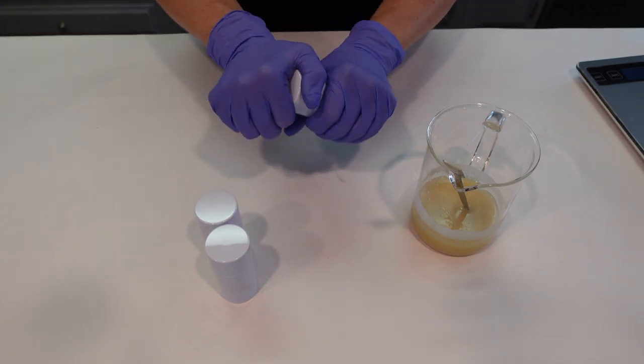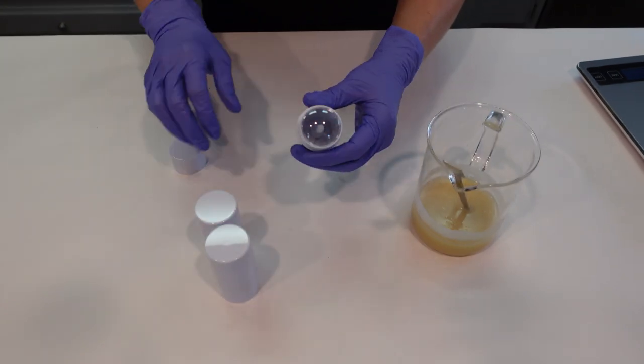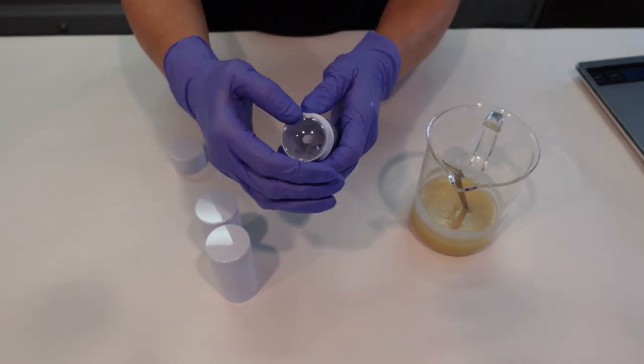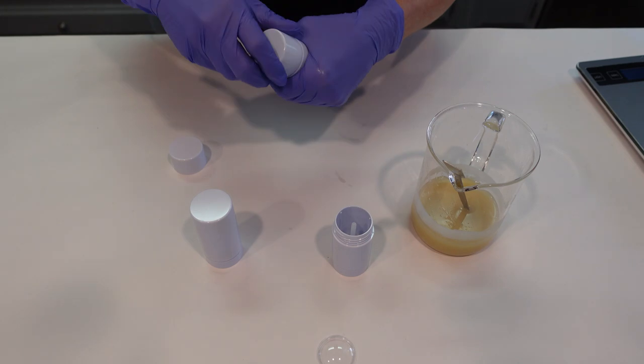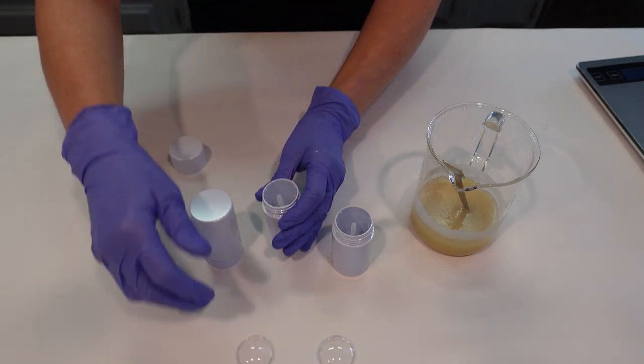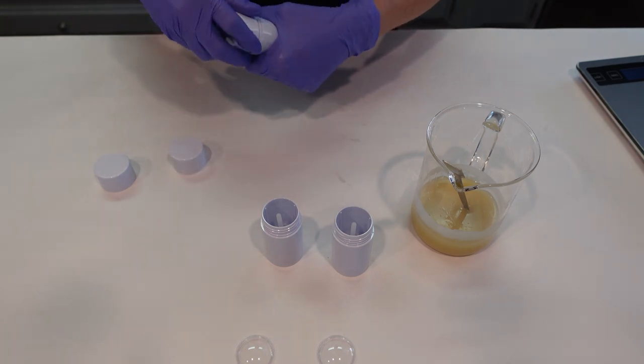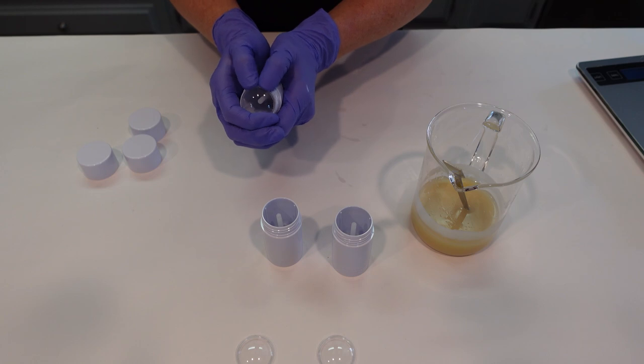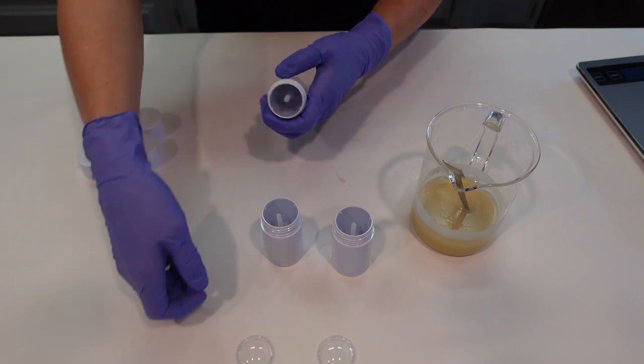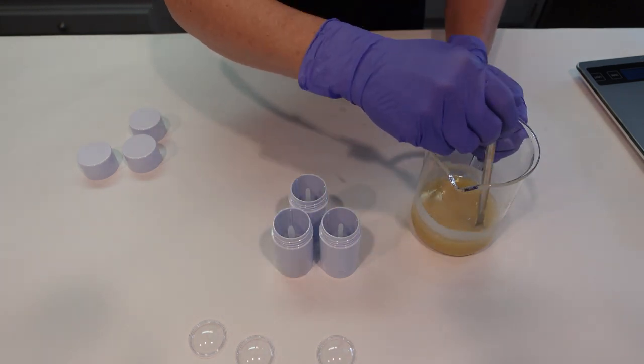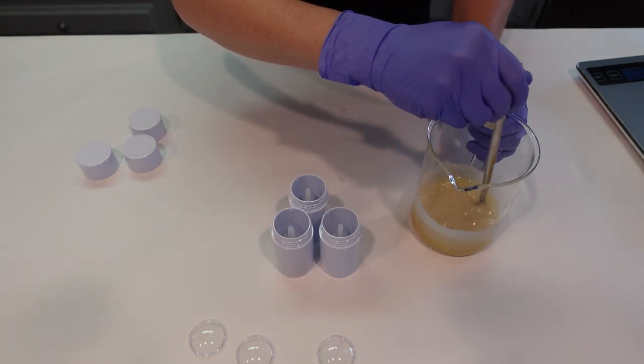All right, we're going to be pouring into these cute little one ounce containers. They have these little domes that go on the top of them. They're super cute, I got these from Bramble Berry, and they twist up. They're just super cute looking, they're one ounce a piece.